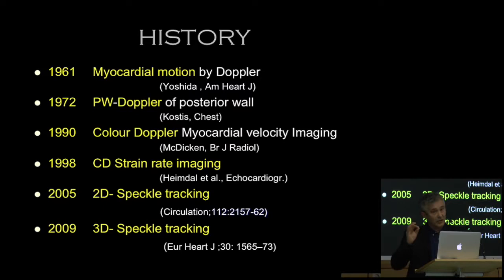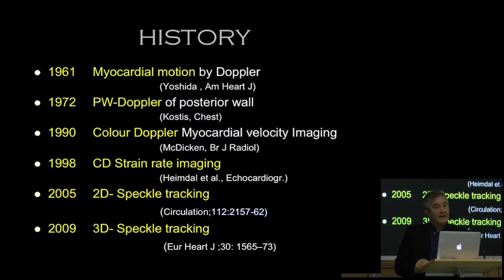Later, the color Doppler technique — where color is coded to show the direction of flow — was developed. Each color intensity corresponds with an absolute velocity, and there was an ingenious invention in the 1990s where differences in velocities were interpreted to study deformation. The next slide will clarify that. However, because it was such a complex technology limited to a few experts, it never caught on in clinical practice.